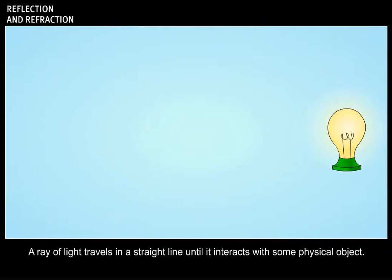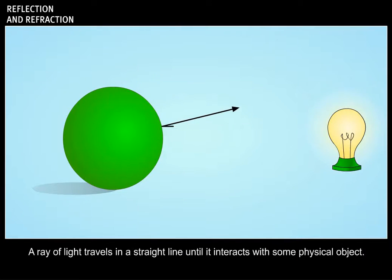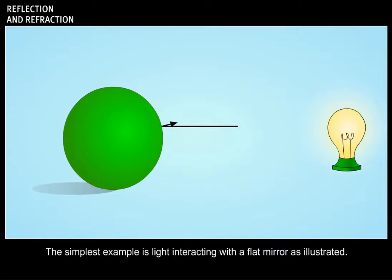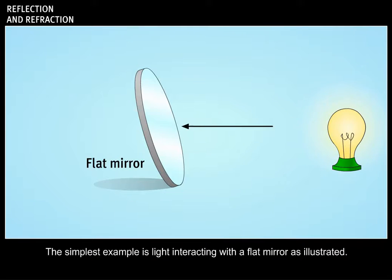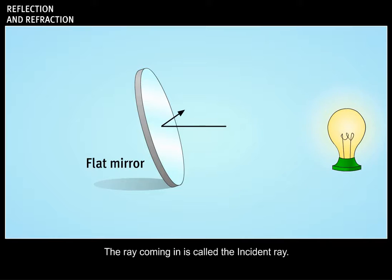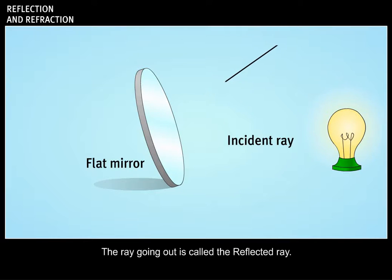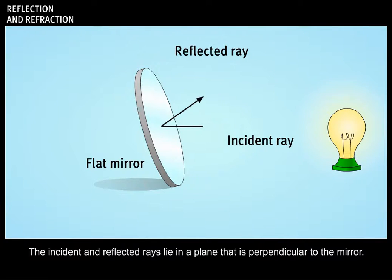A ray of light travels in a straight line until it interacts with some physical object. The simplest example is light interacting with a flat mirror, as illustrated. The ray coming in is called the incident ray. The ray going out is called the reflected ray. The incident and reflected rays lie in a plane that is perpendicular to the mirror.